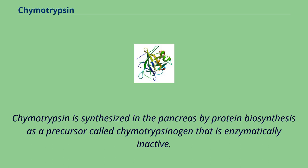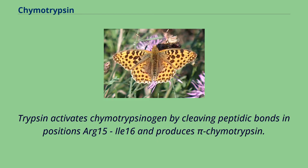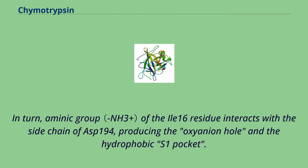Chymotrypsin is synthesized in the pancreas by protein biosynthesis as a precursor called chymotrypsinogen that is enzymatically inactive. Trypsin activates chymotrypsinogen by cleaving peptidic bonds at positions Arg-15 and Ile-16, producing pi-chymotrypsin. In turn, the amino group of the Ile-16 residue interacts with the side chain of Asp-194, producing the oxyanion hole in the hydrophobic S1 pocket.